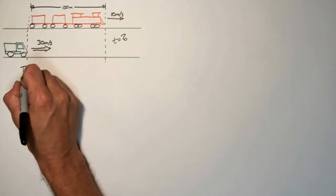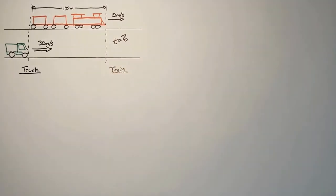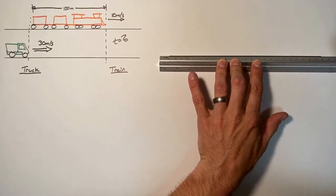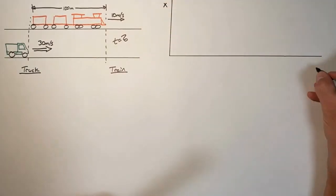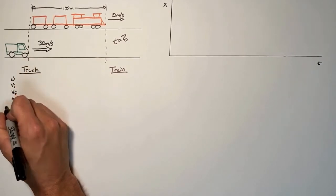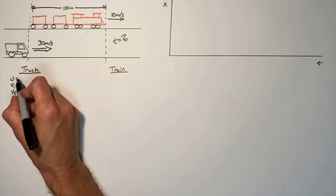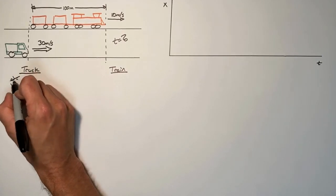To solve this problem, we need to look at both the motion of the truck and the motion of the train, and graph the position versus time of both. Because the truck is starting at a different position than the train, we're not as concerned with displacement of both objects as we are with the position of both the truck and the train.